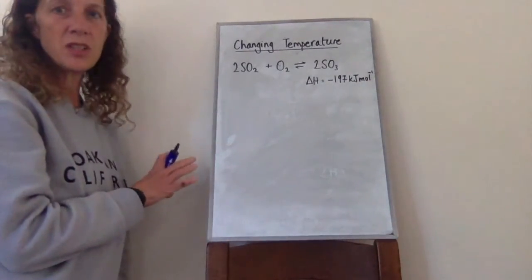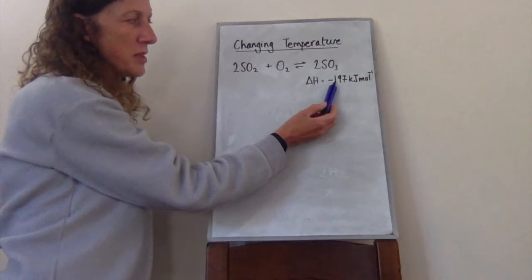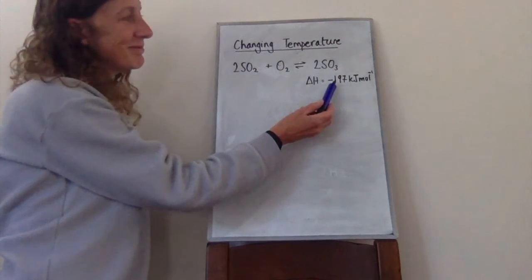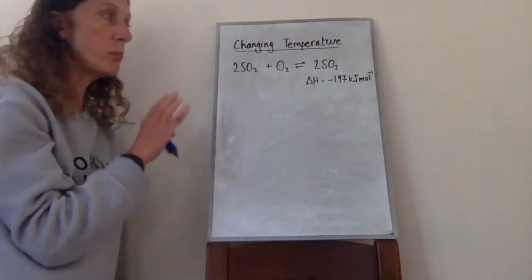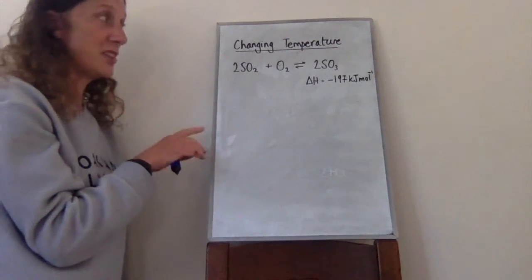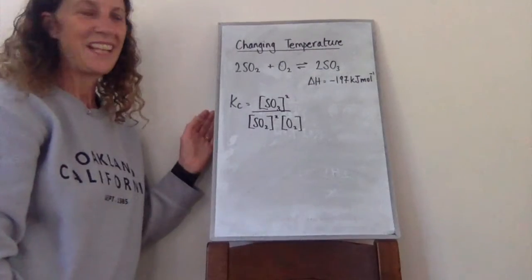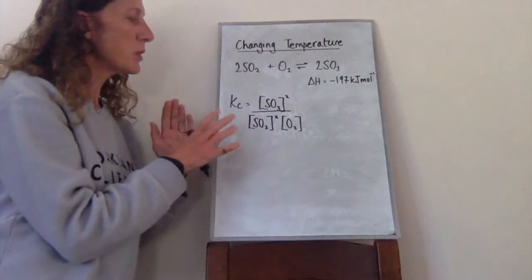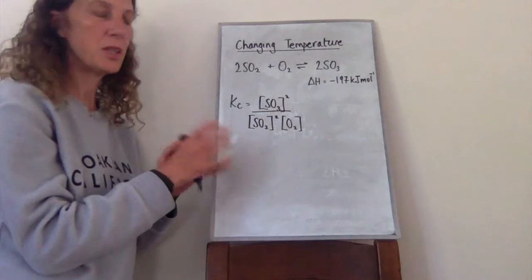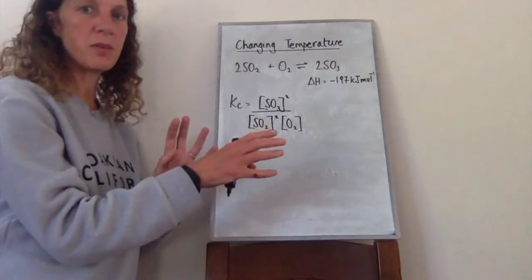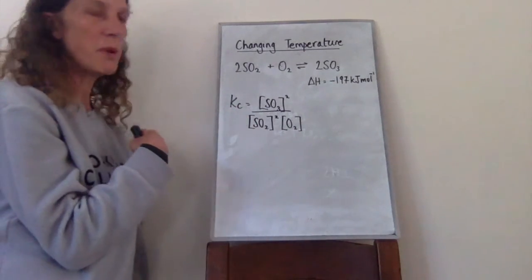Now we're going to look at changing temperature. For this reaction, the ΔH is a negative value, which means the forward reaction is exothermic and the backward reaction is endothermic. Both Kc and Kp change with changing temperature, and which direction they change depends on whether the temperature goes up or down and whether the reaction is exothermic or endothermic.